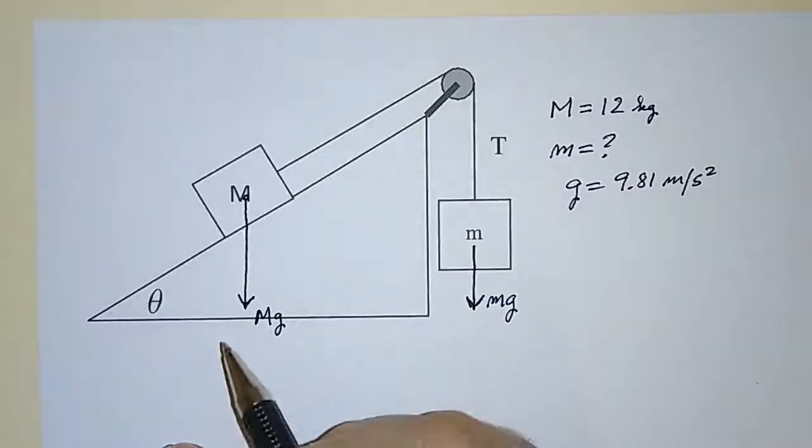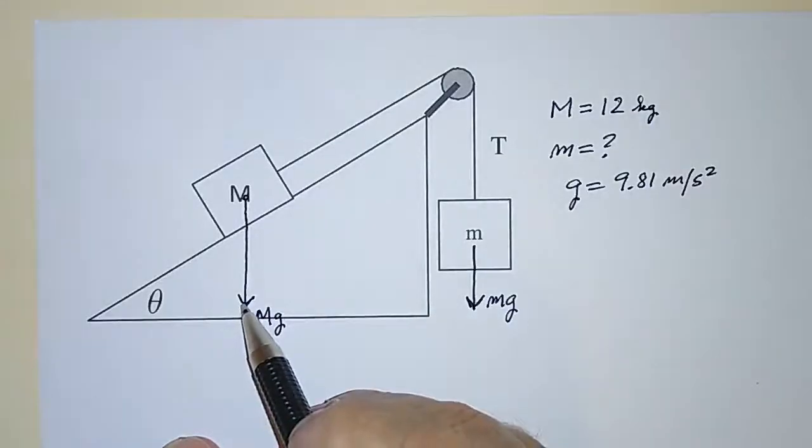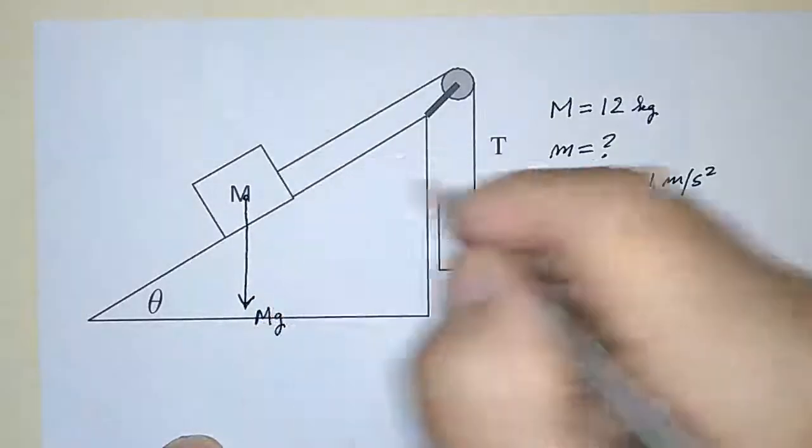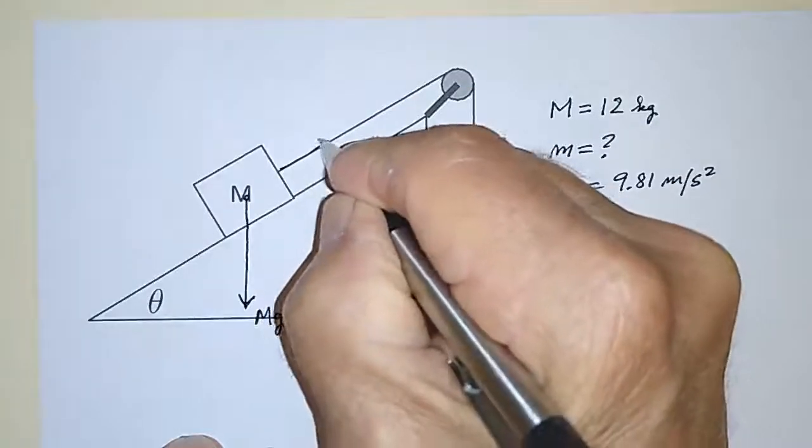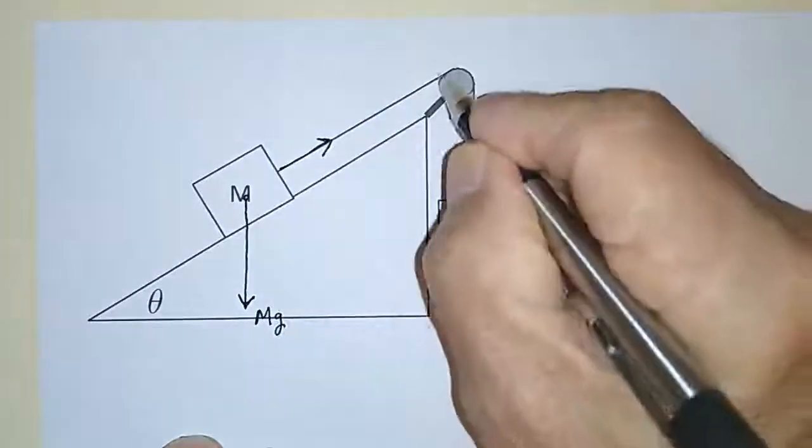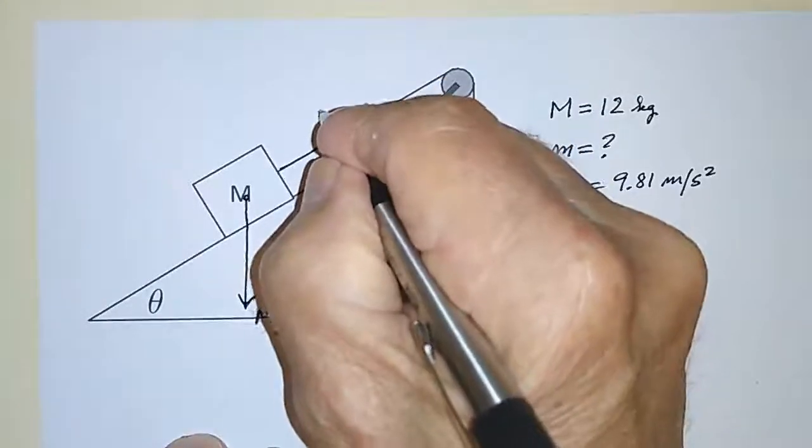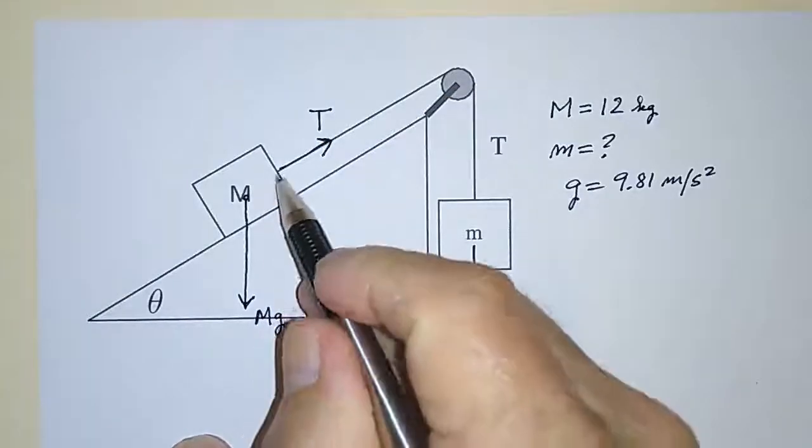And what we have to do is determine what the component of the gravitational force is along the plane, because since the tension in the cord is the same on both ends, and the pulley is also frictionless, it has no effect, so the parallel component of the force that is opposing T is down in this direction.